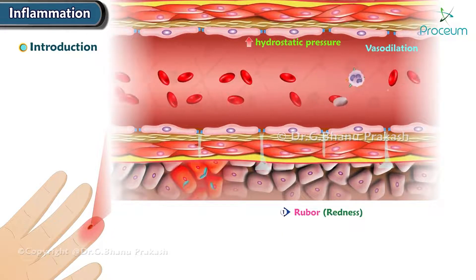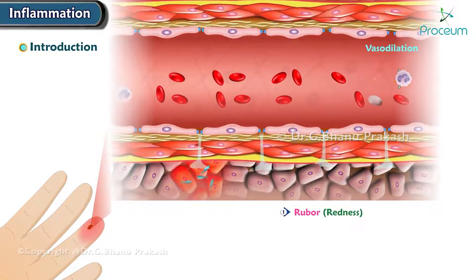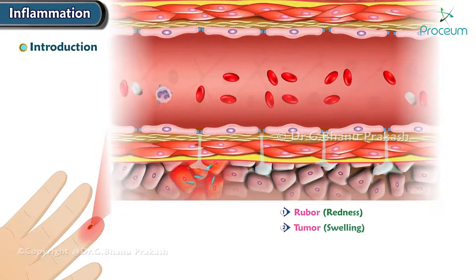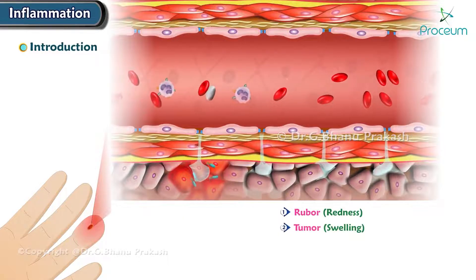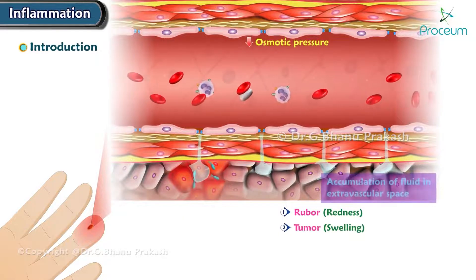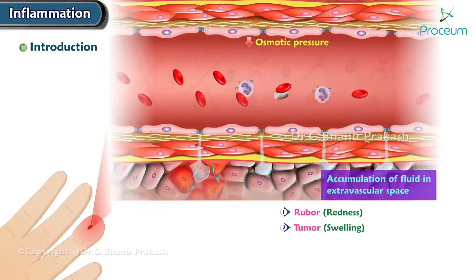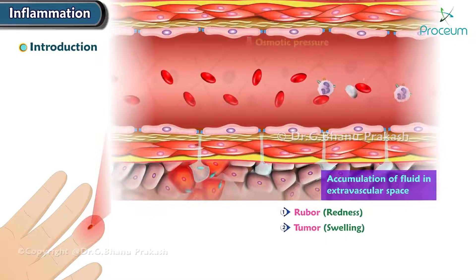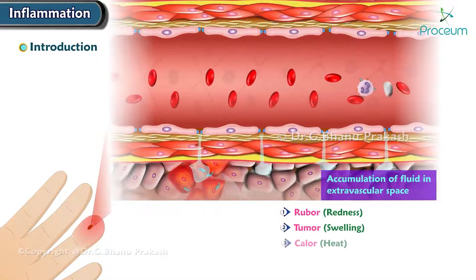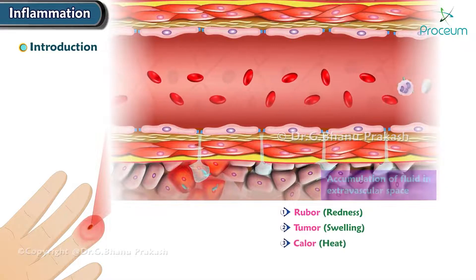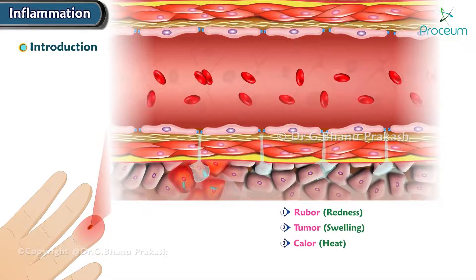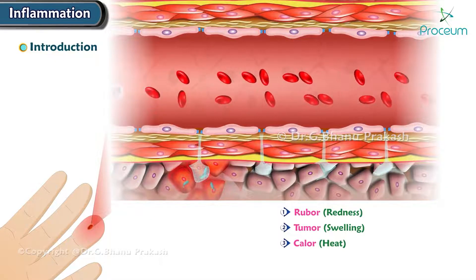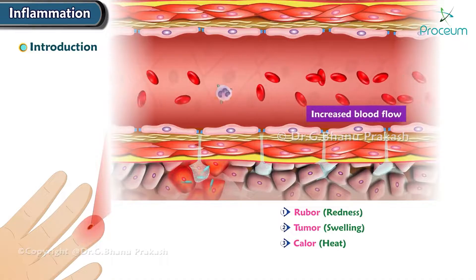The second is tumor, or swelling. This is due to an accumulation of fluid in extravascular space. The third is calor, or heat. This is due to the increased blood flow.